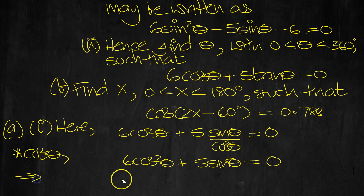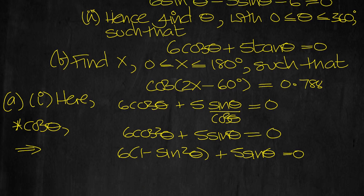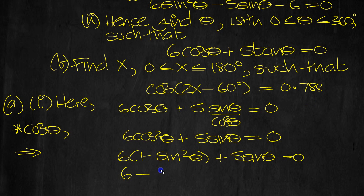And now we just replace the cosine squared by 1 minus sine squared, plus the 5 sine theta, equals 0. Expand the bracket, so we get 6 minus 6 sine squared theta, plus 5 sine theta, equals 0.